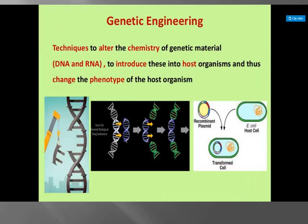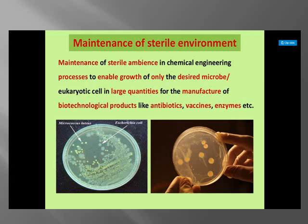Genetic engineering is the technique to alter the chemistry or phenotype of genetic material — that is DNA and RNA — to introduce these into host organisms and thus change the phenotype of the organism. The second core technique is maintenance of sterile environment in chemical engineering processes to enable growth of only the desired microbe or eukaryotic cells in large quantities for the manufacture of biotechnological products like antibiotics, vaccines, and enzymes.